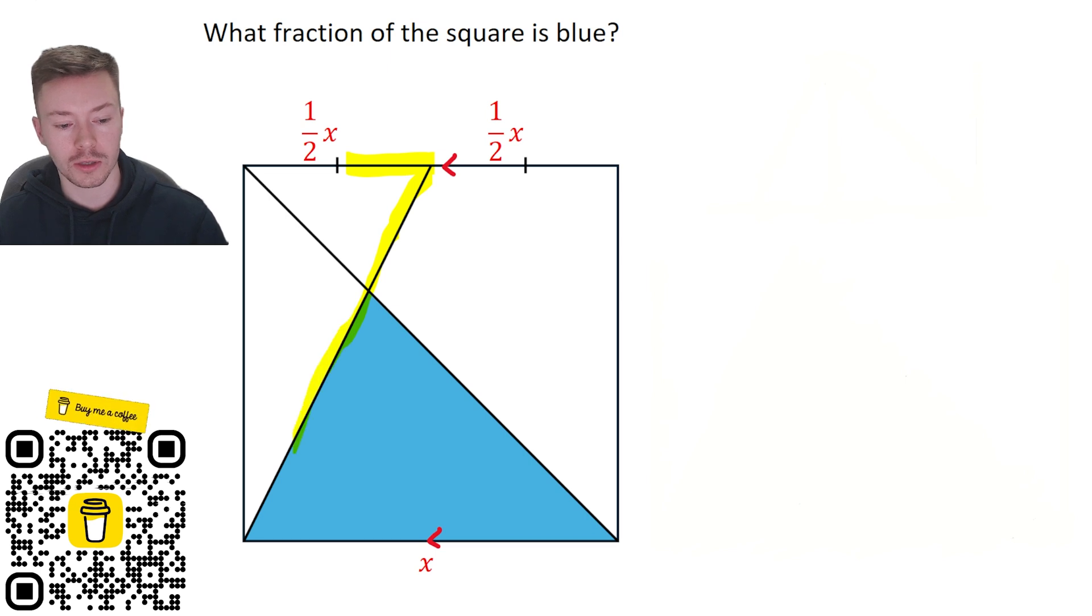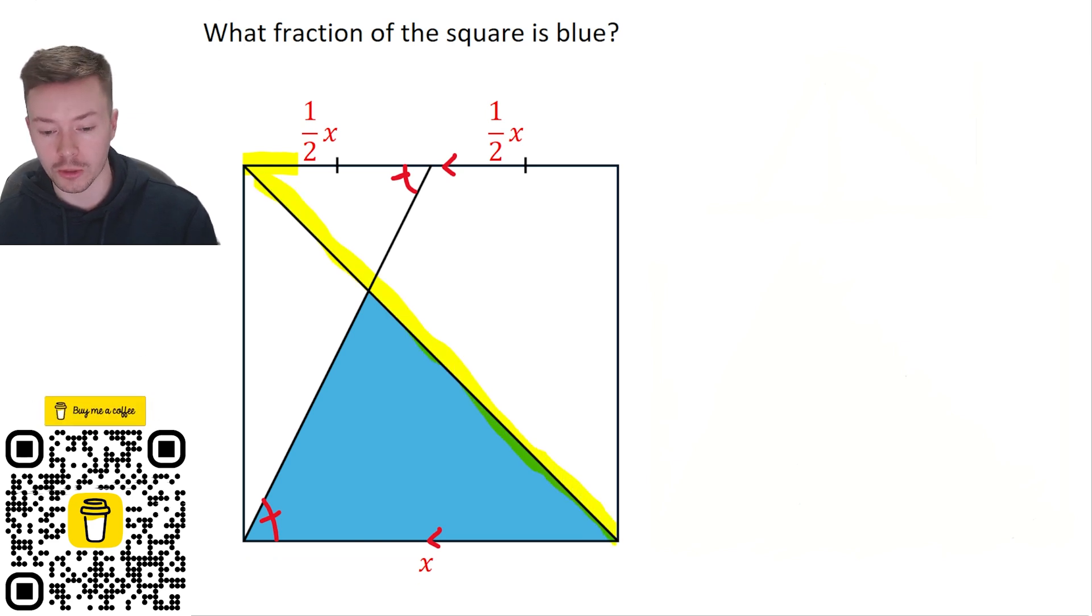So we've got this z shape which forms an alternate angle, so this angle here and this angle here inside of the z shape, they're going to be equal, so those two angles are equal. But we've also got, if we get rid of that, we've got another z shape going the other way, which means that the other two angles are also equal, the top left and the bottom right.